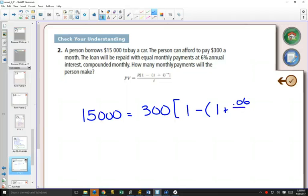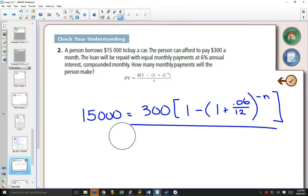it would say, is your interest rate per compounding period since there's 12 compounding periods in a year. That would be 0.06 divided by 12 to the power of negative N, square bracket, all divided by I, which is 0.06 divided by 12.